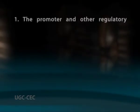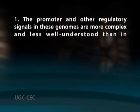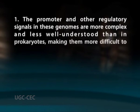These characteristics make prokaryotic gene finding relatively straightforward, and well-designed systems are able to achieve high levels of accuracy. Ab initio gene finding in eukaryotes, especially complex organisms like humans, is considerably more challenging. Promoter and other regulatory signals in these genomes are more complex and less well understood than in prokaryotes, making them more difficult to reliably recognize.